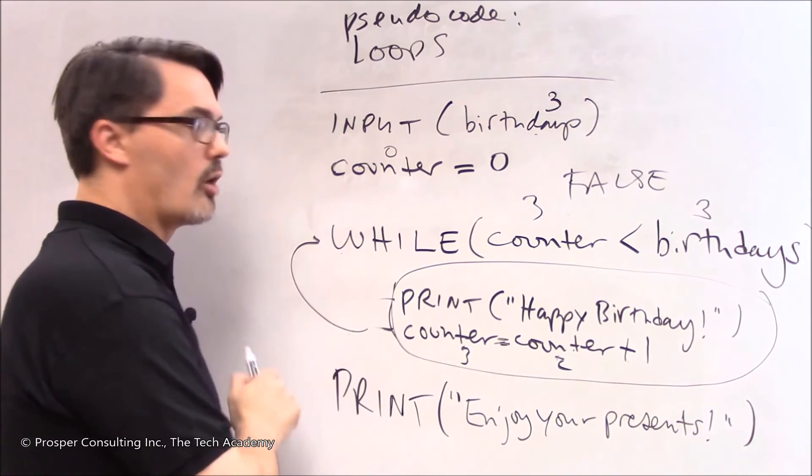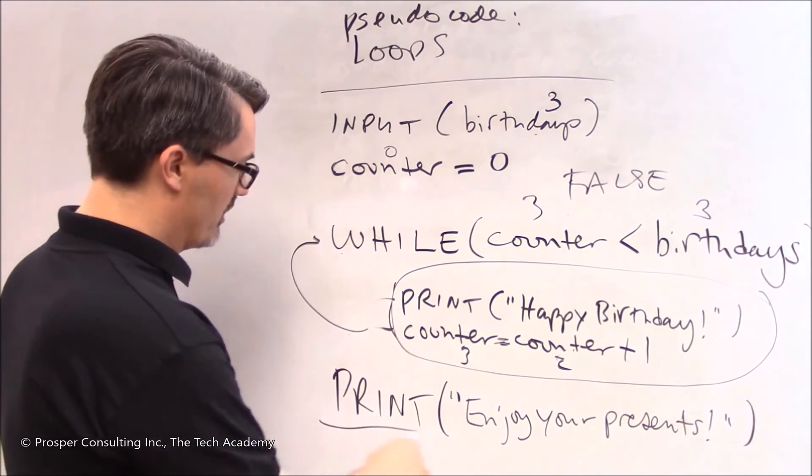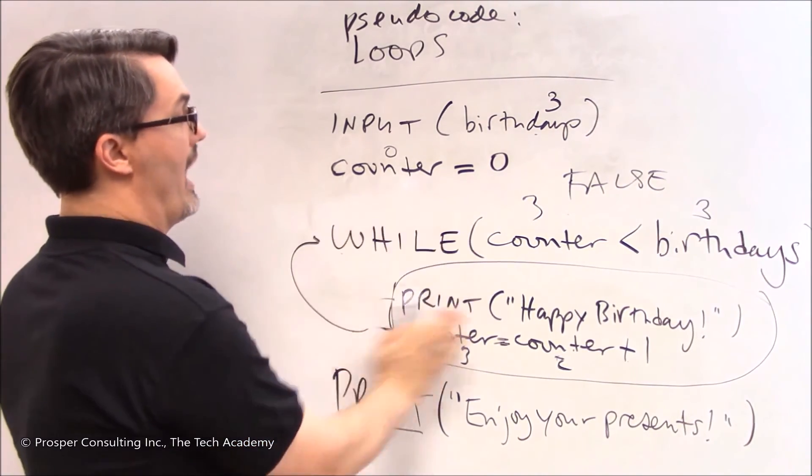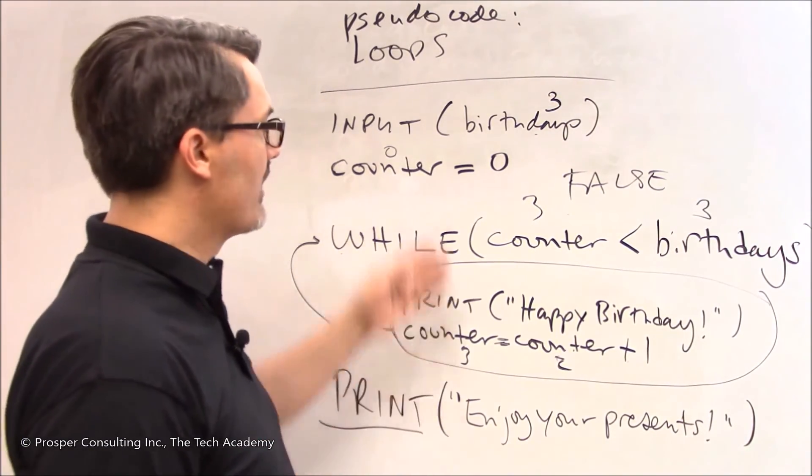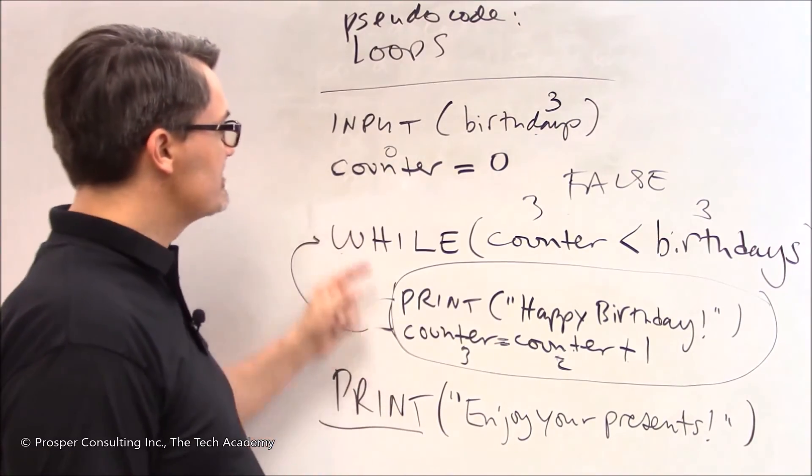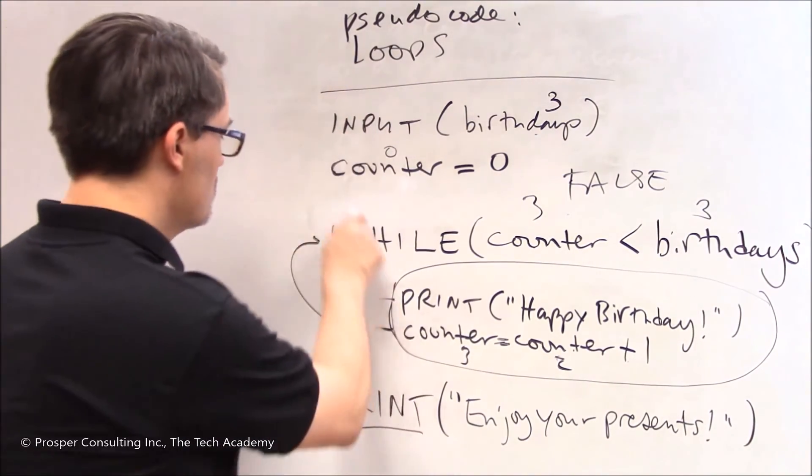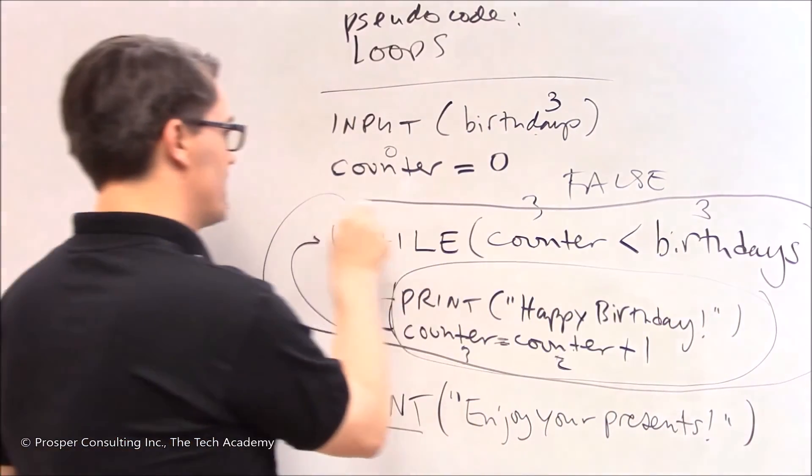So it doesn't do these steps. Instead it moves on with the computer program. It does this one which is not including this whole while thing. And it just prints enjoy your presence. So there is a computer program. This is demonstrating a loop. The loop as you are able to surmise is right here. The while is a looping statement.